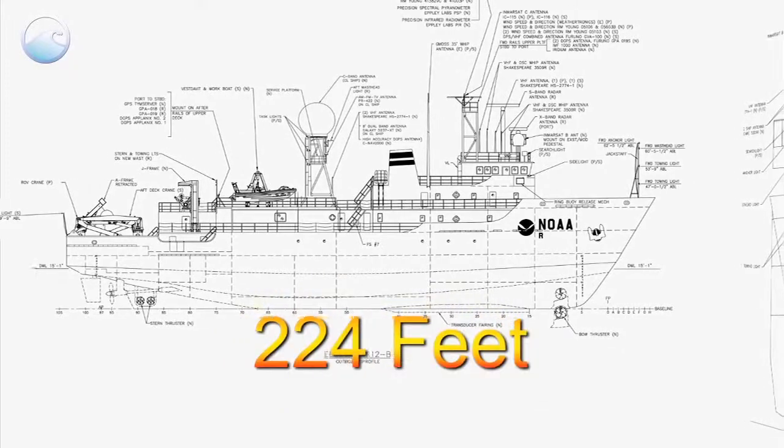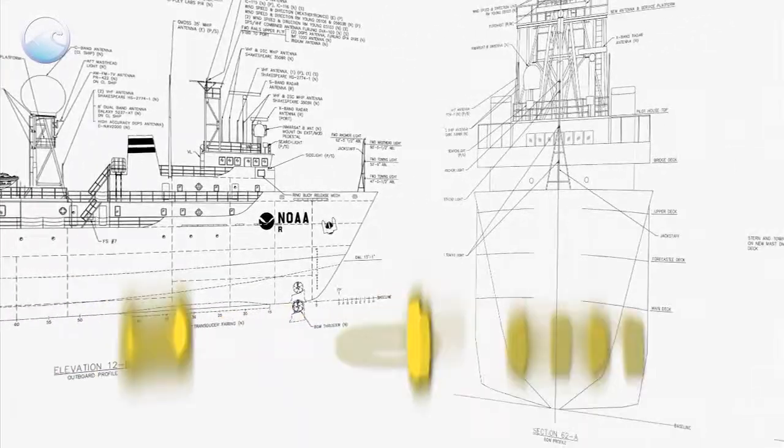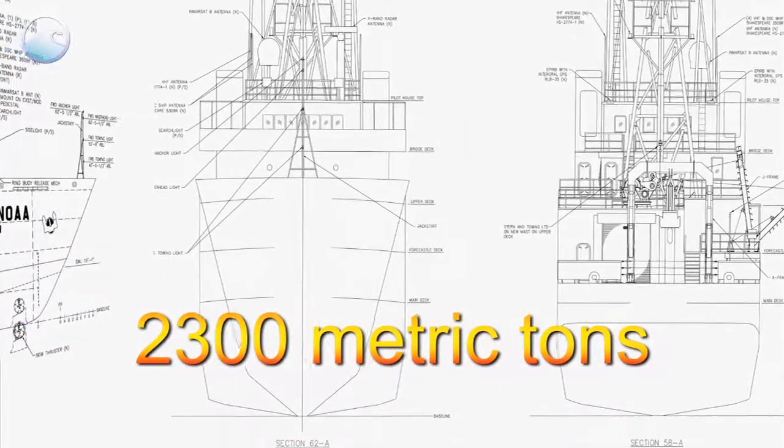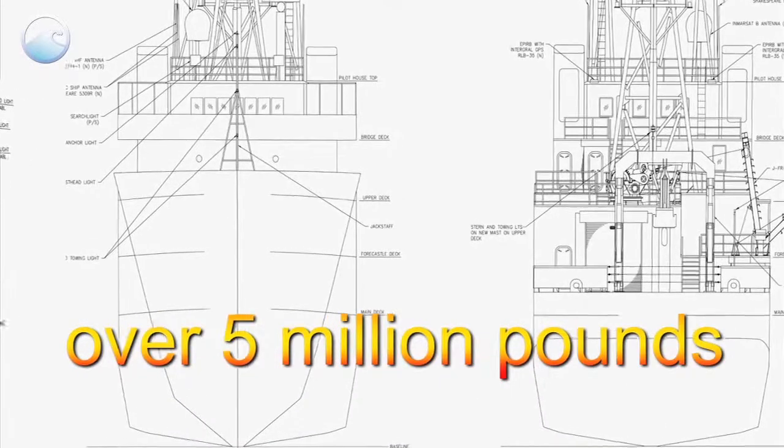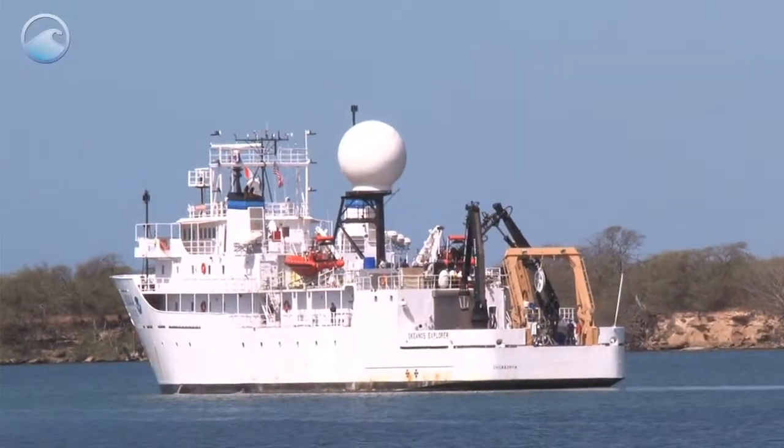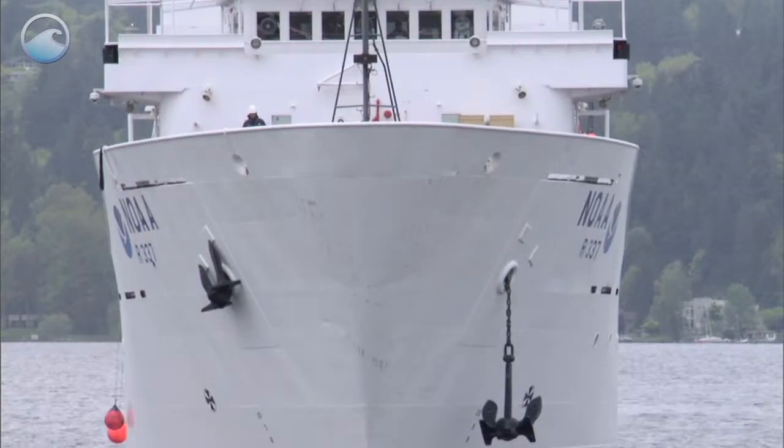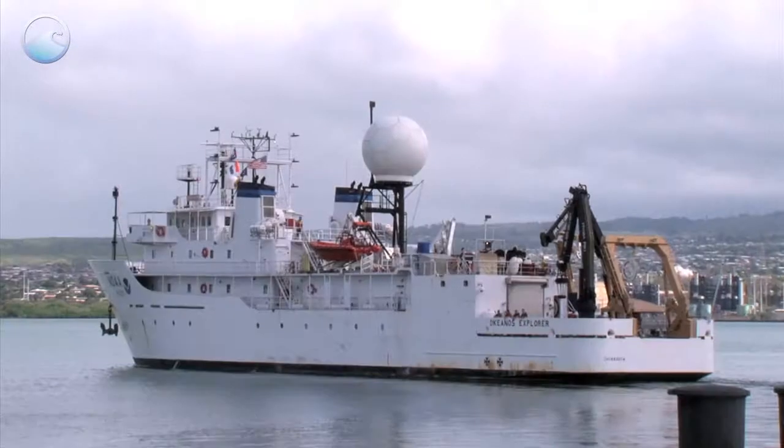This impressive vessel is 224 feet in length and weighs about 2,300 metric tons, which is over 5 million pounds. Okeanos is the first U.S. ship to be dedicated solely to exploration and discovery missions in the ocean.